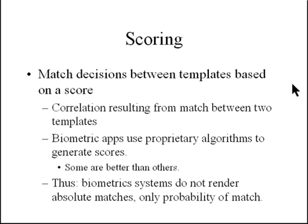The score is a correlation resulting from the match between two templates. Biometric applications use proprietary algorithms to generate these scores, which may range from -1 to 1, 0 to 1, or 1 to 100 — it doesn't matter as long as the same algorithm is used. Some proprietary algorithms are better than others, generating fewer false positives and false negatives.